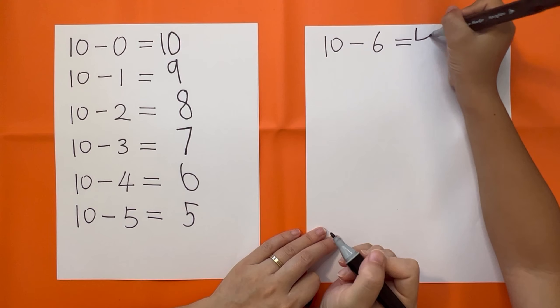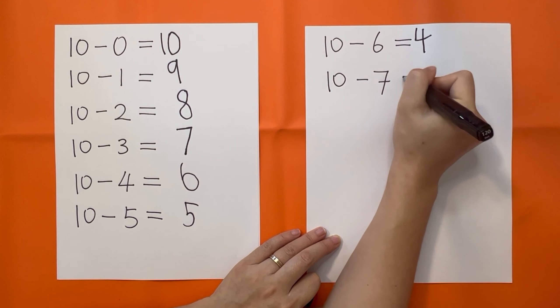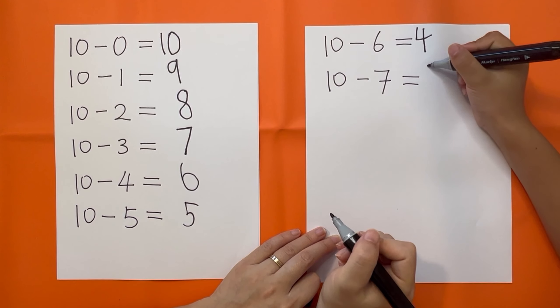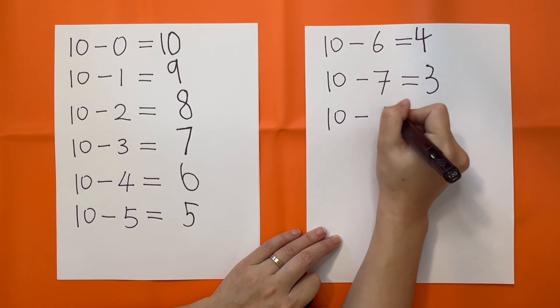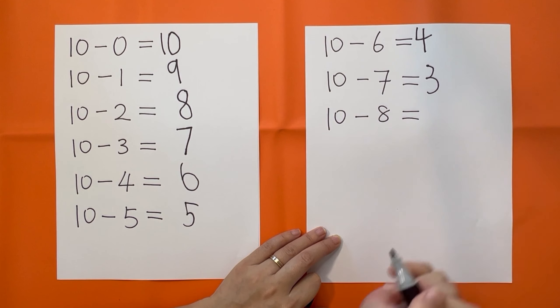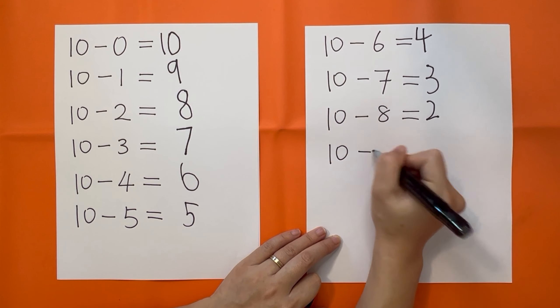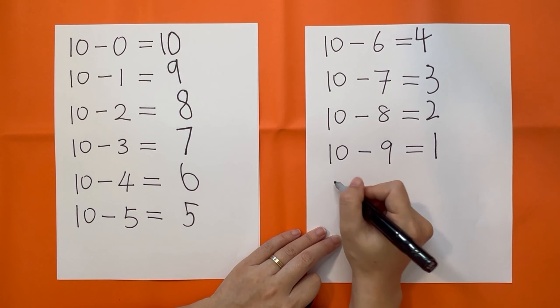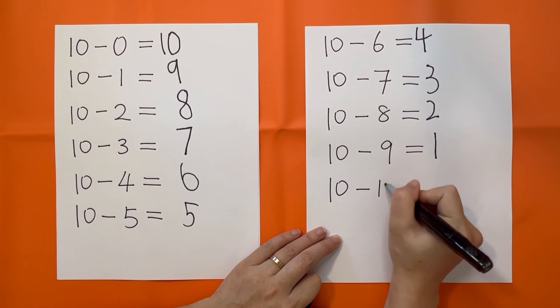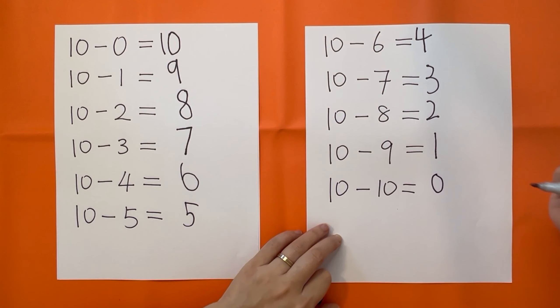10 minus 7 equals 3. 10 minus 8 equals 2. 10 minus 9 equals 1. 10 minus 10 equals 0. Wow, great job Jayden!